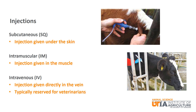The three most common routes of administration for injections are subcutaneous, intramuscular, and intravenous. Subcutaneous injections are given under the skin. Intramuscular injections are given directly into the muscle. Intravenous injections are given directly into the vein.